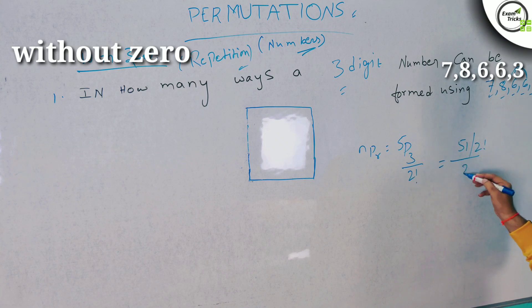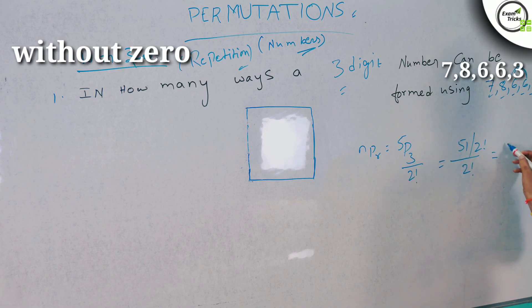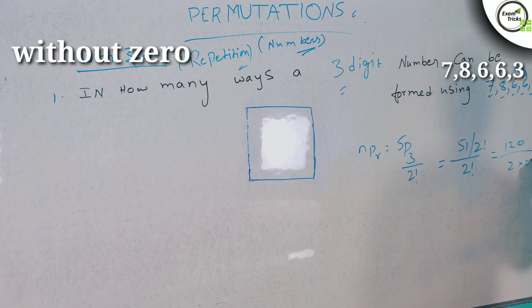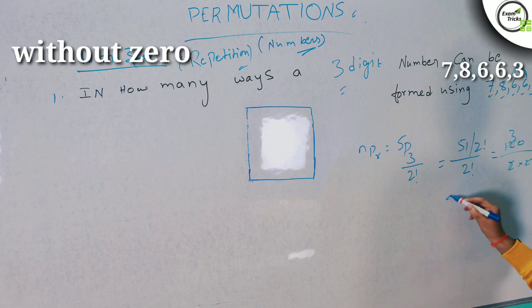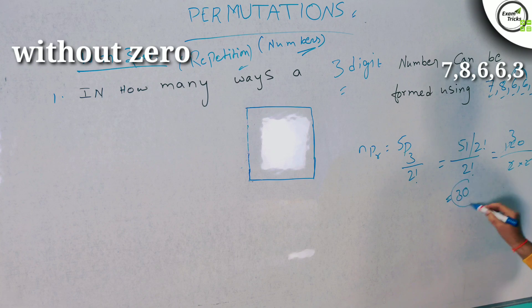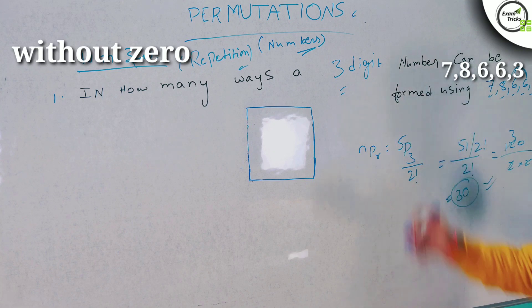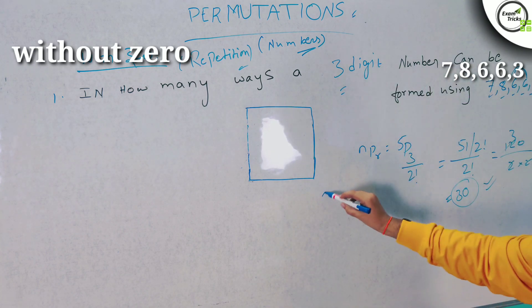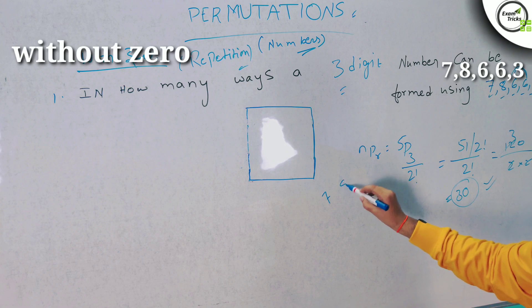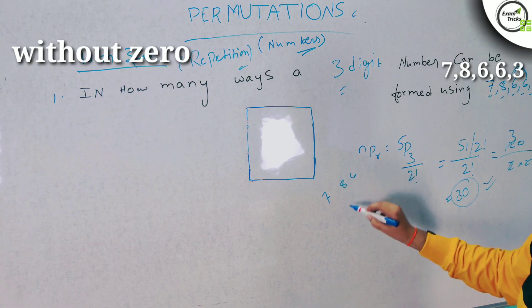5 factorial is 120. 2 factorial is 2. So 120 divided by 2 factorial, which is 4 times 3, and we get the answer. The answer for how many ways a 3-digit number can be formed from 7, 8, 6, 6, 3 is calculated. The formula makes it simple even when manual enumeration seems impossible.